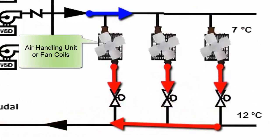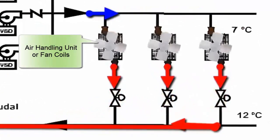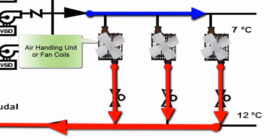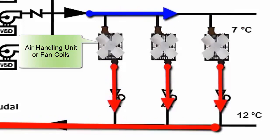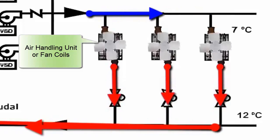The chilled water reaches the building and passes to the air handling units, or fan coils, where a fan is responsible for passing air through each coil, or heat exchanger to cool the air.